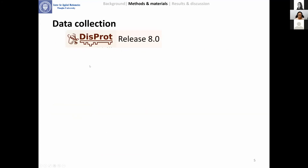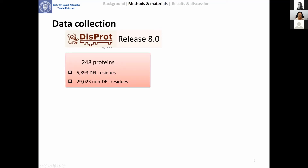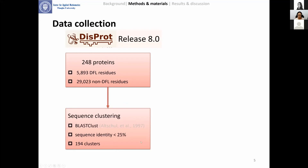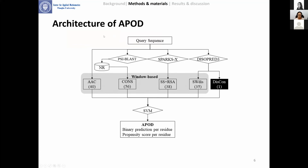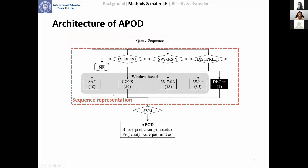To solve this problem, we collected proteins from the DisProt database release 8.0, which comprises nearly 6,000 DFL residues and nearly 30,000 non-DFL residues. Our collected dataset is unbalanced. We then removed sequence redundancy, and finally divided the non-redundant datasets into training and test datasets respectively. Using the training dataset, we designed the APOD model following the architecture presented in this figure. The APOD model takes the sequence as input. Each amino acid is represented by a 170-dimensional numerical vector, which is fed into the support vector machine algorithm. The model outputs both binary and propensity scores for each residue in the input sequence.